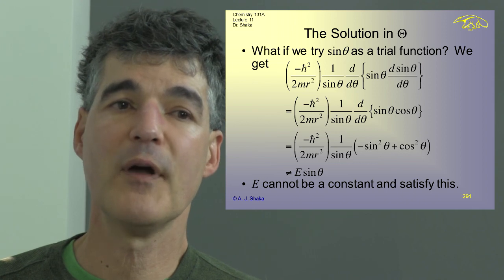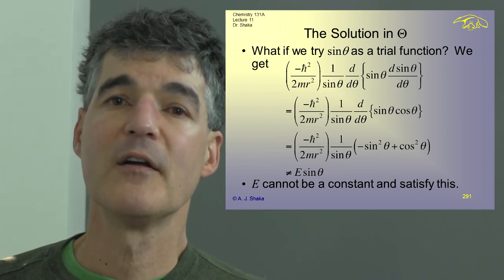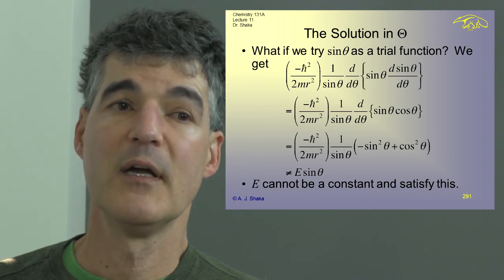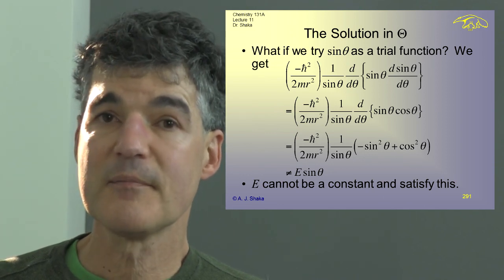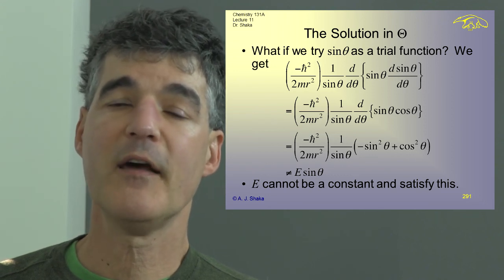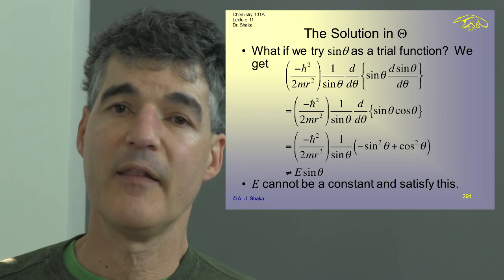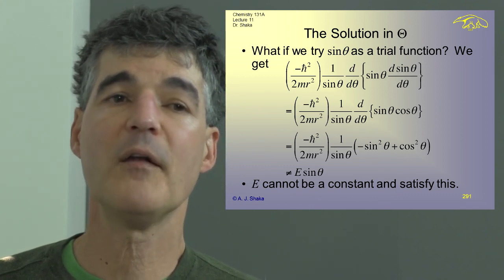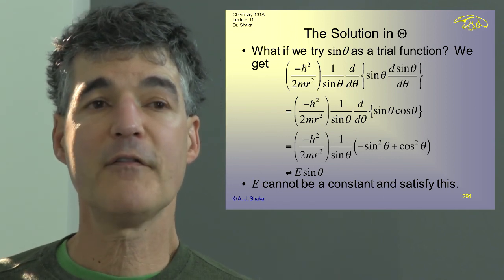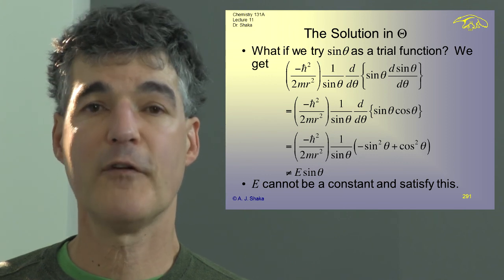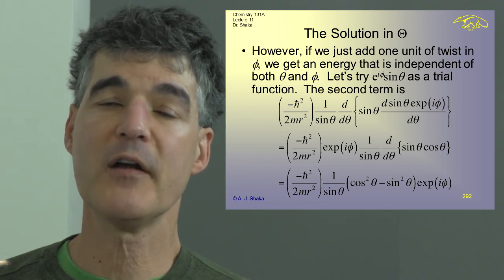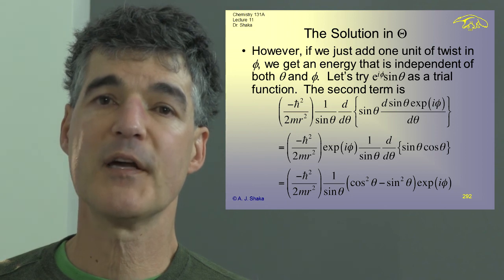We have minus h-bar squared over 2mr squared, 1 over sine theta, times cosine squared theta minus sine squared theta, and that should equal E times sine theta. That cannot possibly be true because we have cosine squared and sine squared that aren't canceling out, so that cannot be true for a constant E when theta is varying. We have to think about how to make up for this — the only way is to have some other part come in from the derivative with respect to phi.